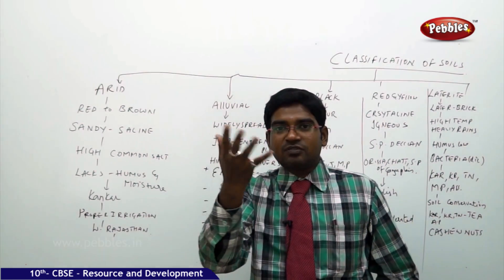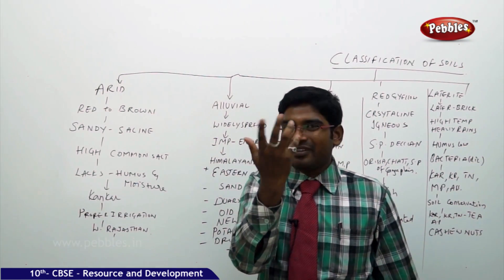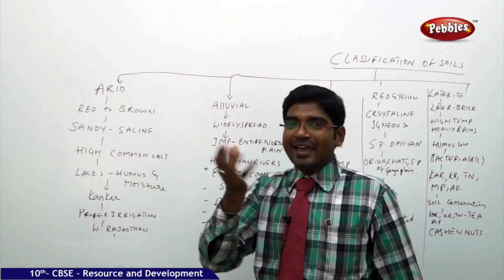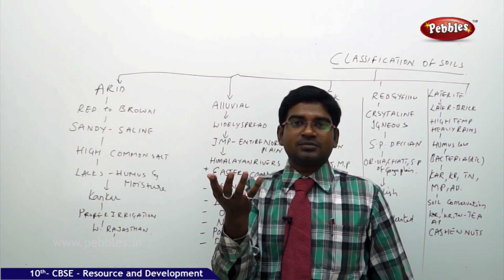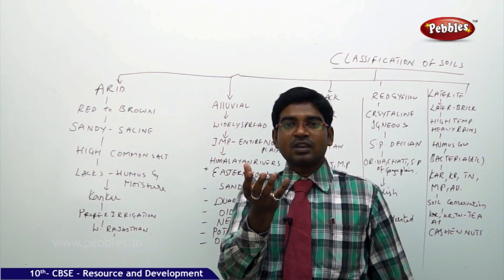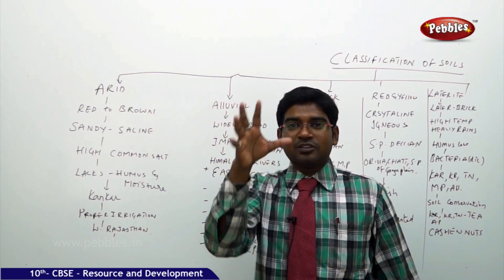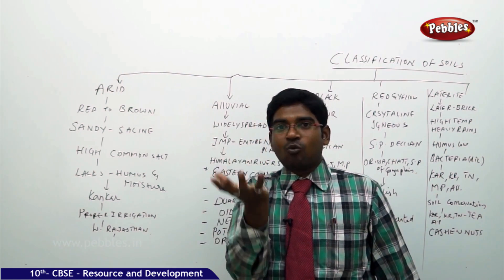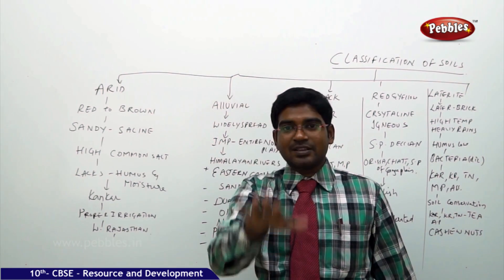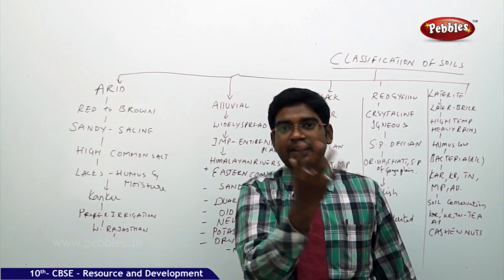Then we have the nature of the soil is sandy. It is very, very sandy and it has more saline content. How water will get saline content? When the water mixed with the other salts, water is getting evaporated. Salts are remaining in the land. Then that nature will come.